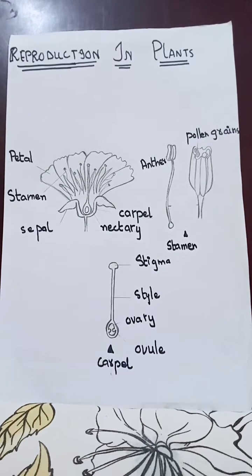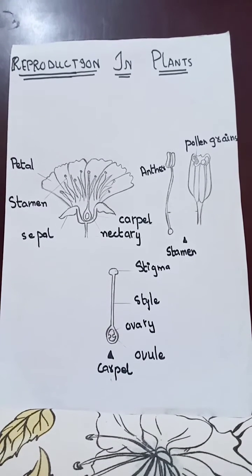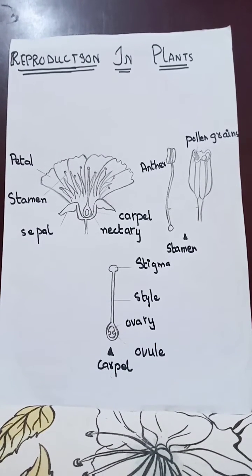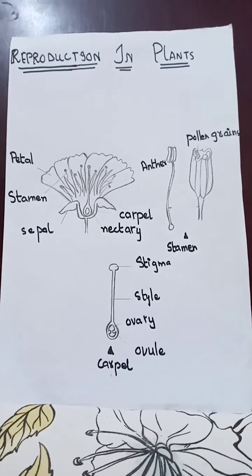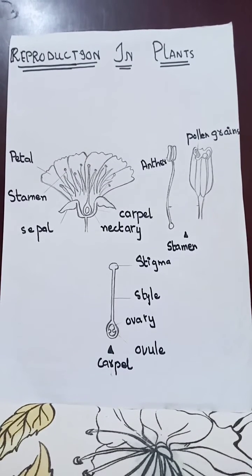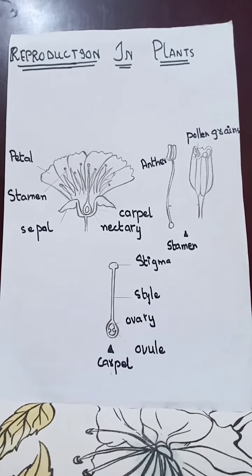For reproduction to be successful, pollen grains and ovules must be brought together through a process called pollination.